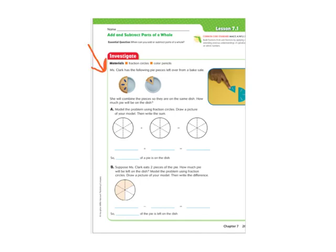So here in our investigation, it says that Ms. Clark has the following pie pieces left over from the bake sale. She wants to combine the pieces so they're on one dish, how much pie will be on the dish. So we're going to model here.